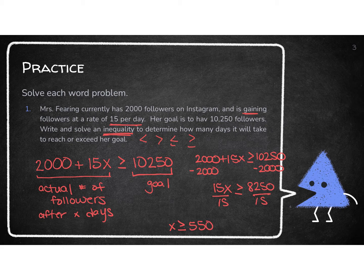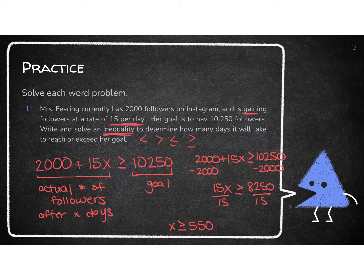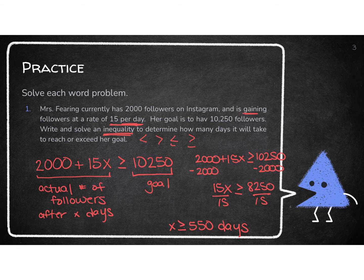And then a problem with words needs an answer with words. So this is talking about per day. So after 550 days, I will have more than or equal to my 10,250 followers.